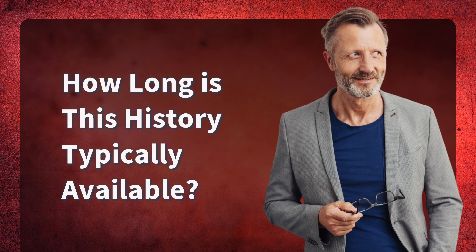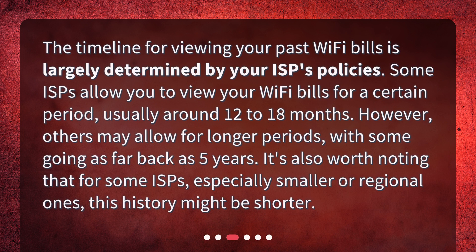How long is this history typically available? The timeline for viewing your past Wi-Fi bills is largely determined by your ISP's policies. Some ISPs allow you to view your Wi-Fi bills for a certain period, usually around 12 to 18 months. However, others may allow for longer periods, with some going as far back as 5 years. It's also worth noting that for some ISPs, especially smaller or regional ones, this history might be shorter.